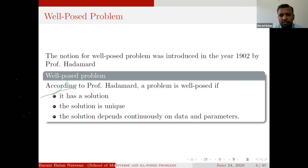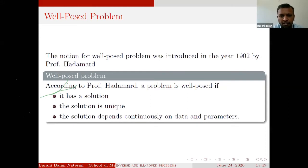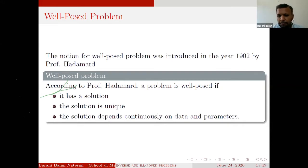If any one of the three conditions — existence, uniqueness, or stability — doesn't hold, we say the problem is ill-posed. When a problem is ill-posed, one idea is to try to convert the ill-posed problem into a well-posed problem. The first condition (existence) may not be such a big deal, and uniqueness might also be manageable, but the stability condition is very hard. We cannot expect the stability condition to hold for all problems. If any one condition fails, according to Professor Hadamard, the problem is ill-posed.